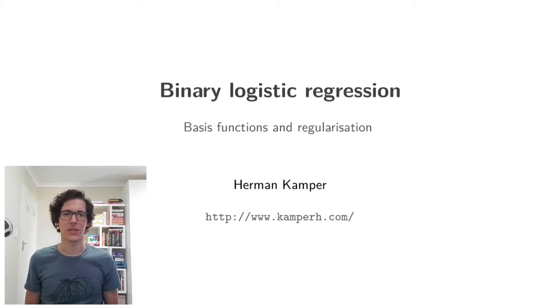We have seen that logistic regression gives us a linear decision boundary when we look at it in the feature space. But just as in linear regression, we can actually allow logistic regression to make non-linear decisions and have a non-linear decision boundary. That's what we're going to look at in this video.